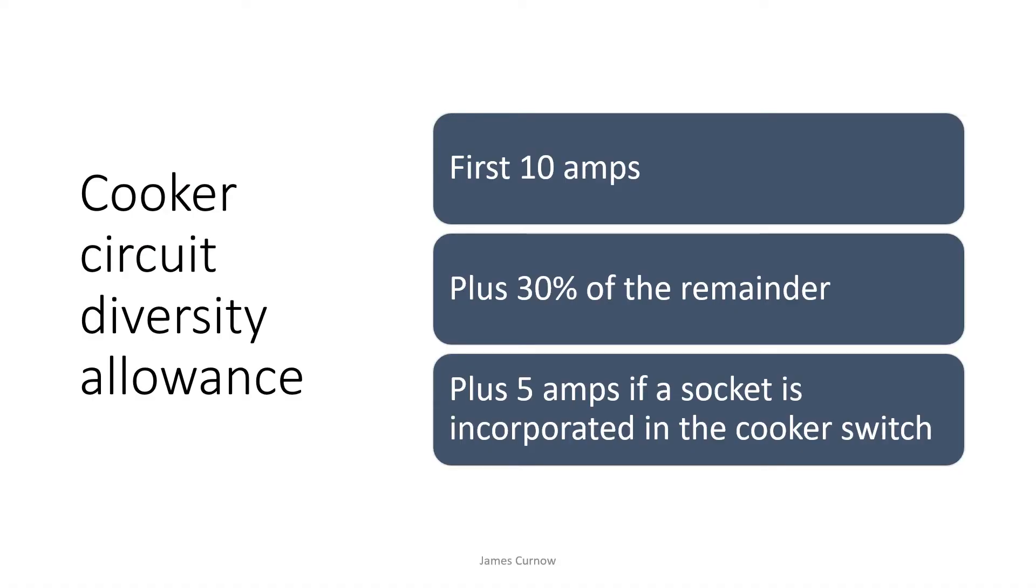The diversity allowance for a cooker in a domestic installation is the first 10 amps plus 30% of the remainder, and plus 5 amps if a socket outlet is incorporated in the cooker switch, according to table A2 in the on-site guide. Please note that allowances are different for business premises or hotels, so please refer to the on-site guide for more information.